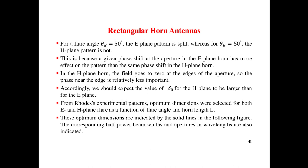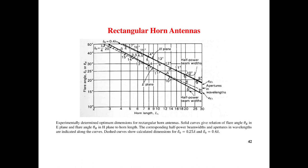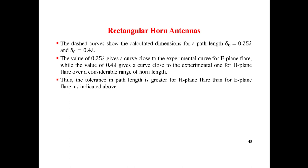The optimal dimensions indicated by the solid line in the following figure. The corresponding half-power beam width and aperture are also indicated. Shigar shows the horn length with different phase angles. Horn dimension delta naught is 0.5 lambda for E-plane and 0.4 lambda for H-plane.